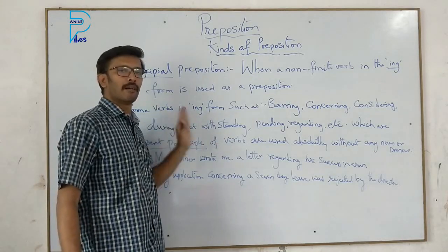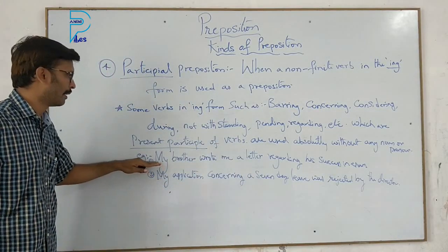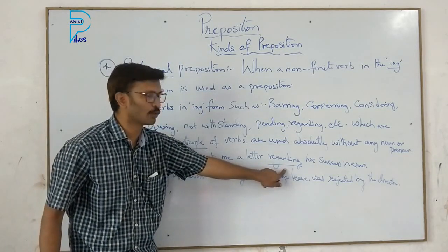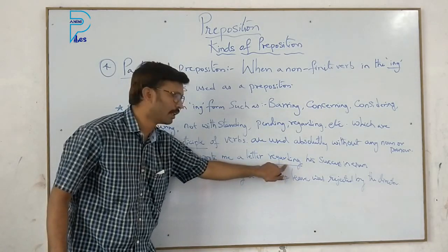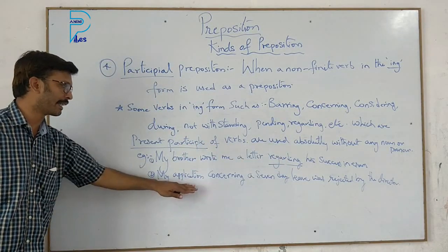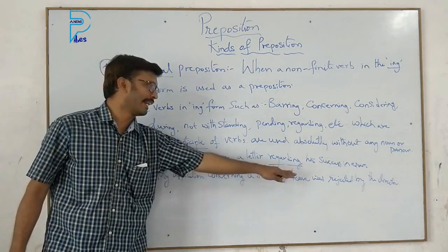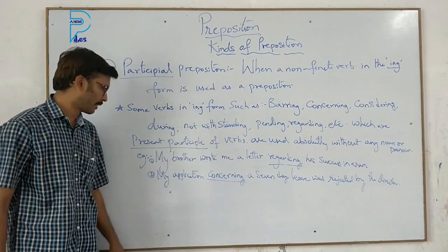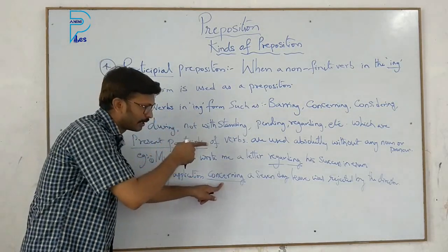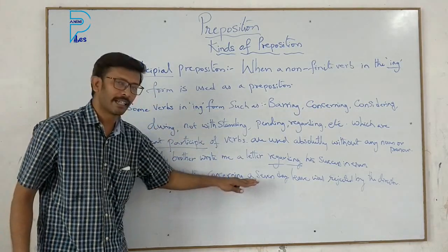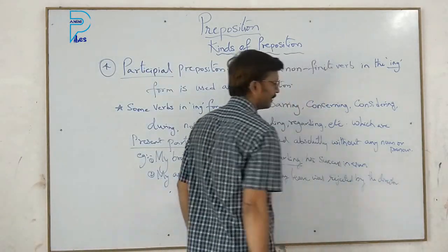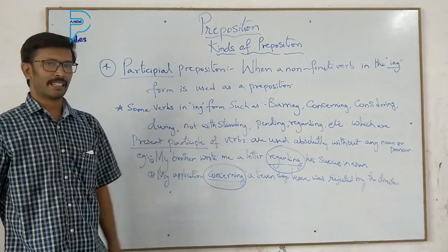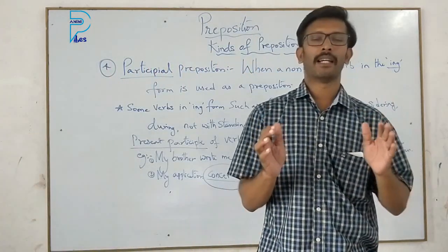Let us see examples: 'My brother wrote me a letter regarding his success in examination' — here 'regarding' looks like a verb but is used as a preposition. 'My application concerning a seven-day leave was rejected by the director' — here 'concerning' is also used as a preposition. So both 'regarding' and 'concerning' are participial prepositions used in the sentence.